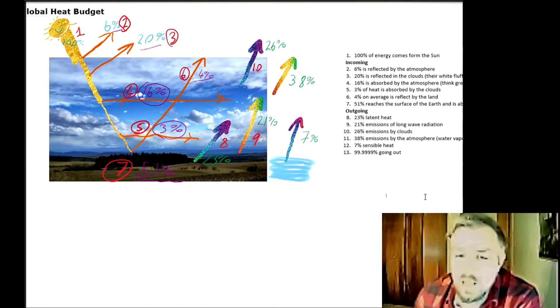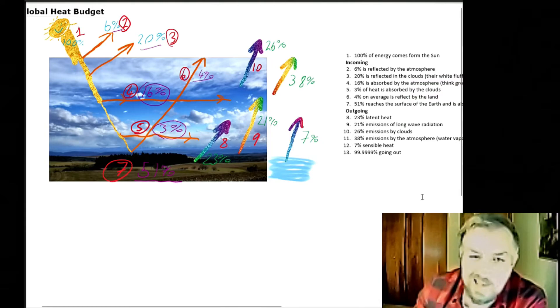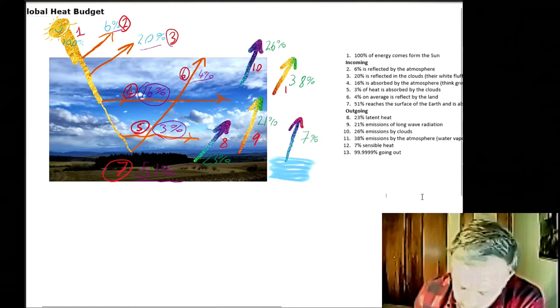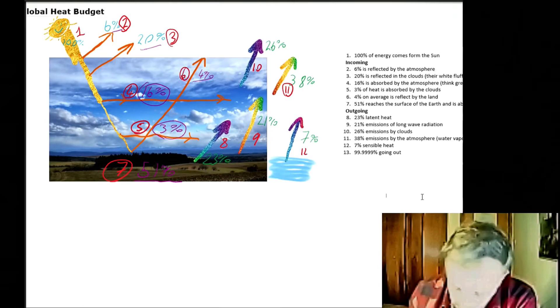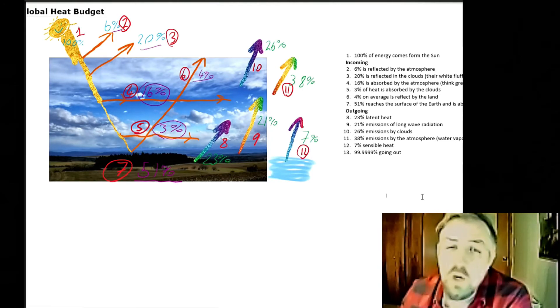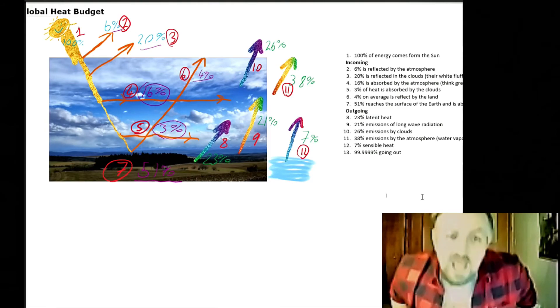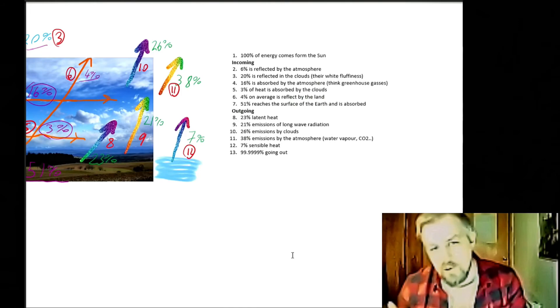Eventually, 26% is then given off by the clouds themselves. 38% is emissions from the atmosphere - these are the things that are trapped by water vapour and greenhouse gases. They then give off around about 38%. And number 12 is 7% is given off for something called sensible heat, which is when heat is given off by the change in thermodynamic properties.